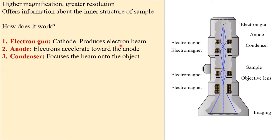Third component is a condenser. Like light microscope its work is to focus and it focuses the electron beam onto the object. So sample is now focused by the electron beam.